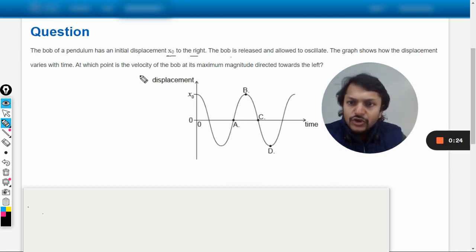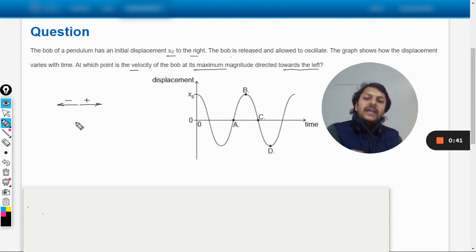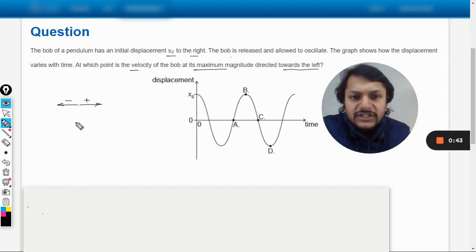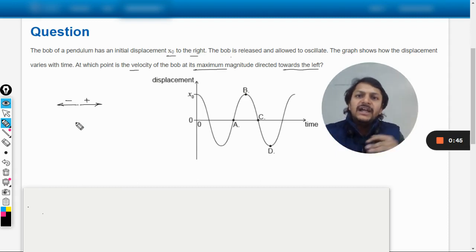So we want to find the point at which the velocity is maximum and that it is directed towards the left hand side. In simple harmonic motion, we take right hand side to be positive and left hand side to be negative. They want negative velocity, so negative velocity means that the body is moving towards left hand.